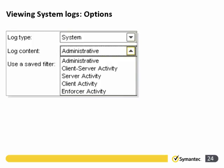Here are the system log options. With the log type set to system, we choose the log content: administrator, client and server activity, server activity only, client activity only, or enforcer activity. The enforcer activity is specific to NAC — network access control — and requires that license and the enforcer to be set up to gather any information there.